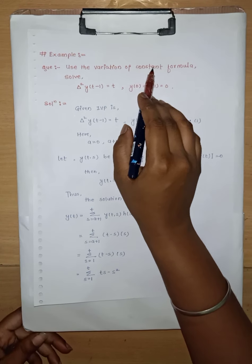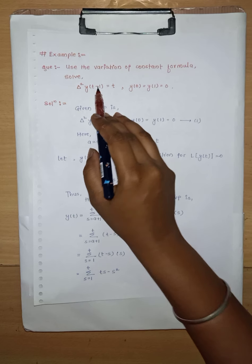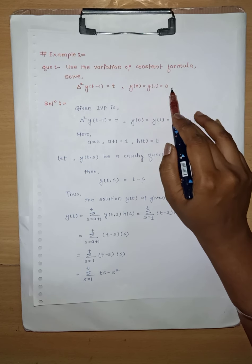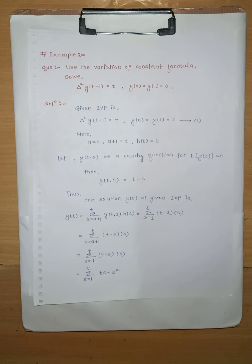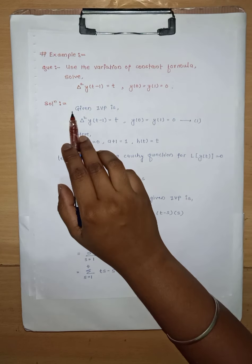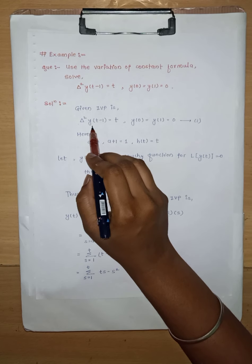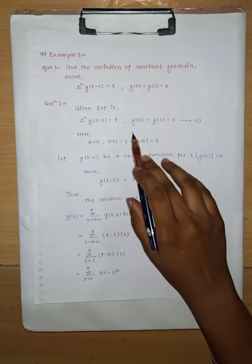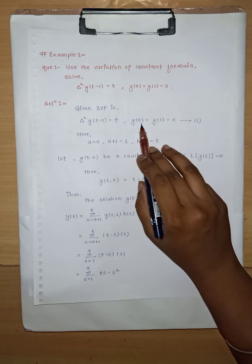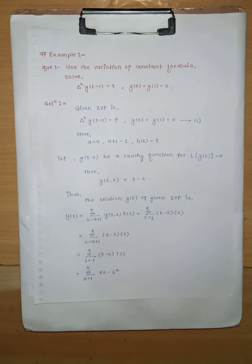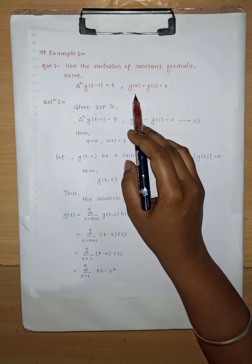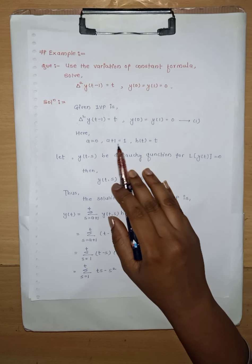Similarly y(a+1) = u(a+1) = B. Now L[y(t)] = L[u(t)] + summation over s from a+1 to t of L[y(t,s)]*h(s). Since u(t) is the solution of L[u(t)] = 0, that term is 0. Since L is a linear operator, we can bring it inside the summation: summation of L[y(t,s)]*h(s) = h(t). Hence y(t) is the solution of the given IVP, and we have proven the corollary.